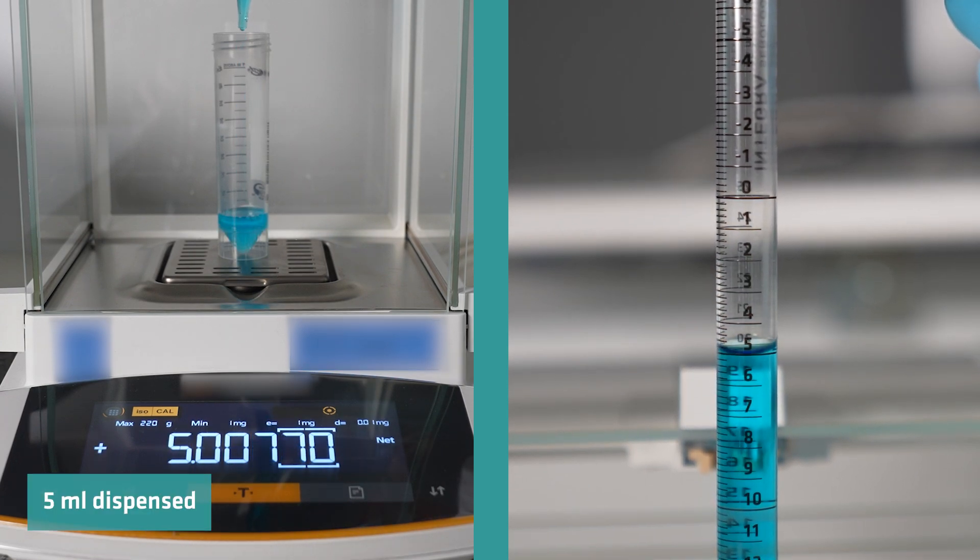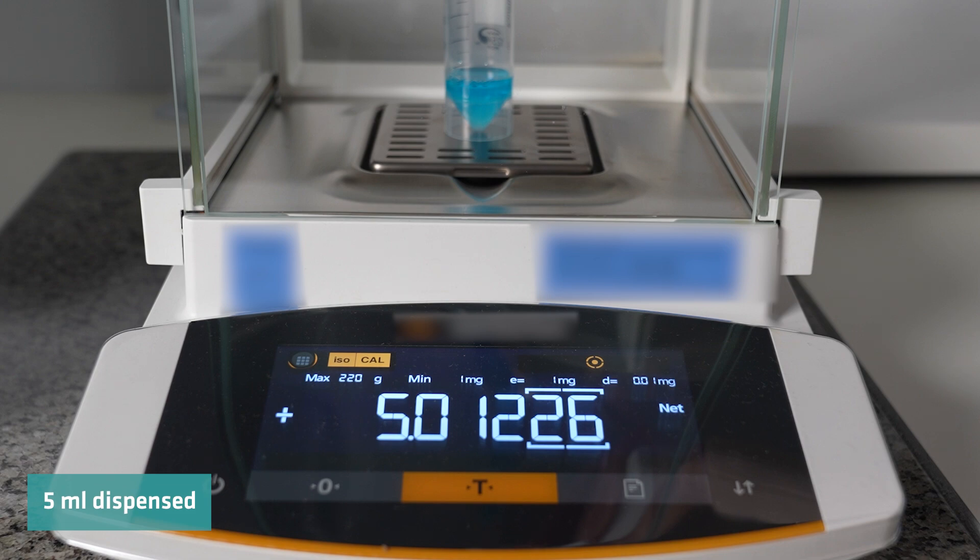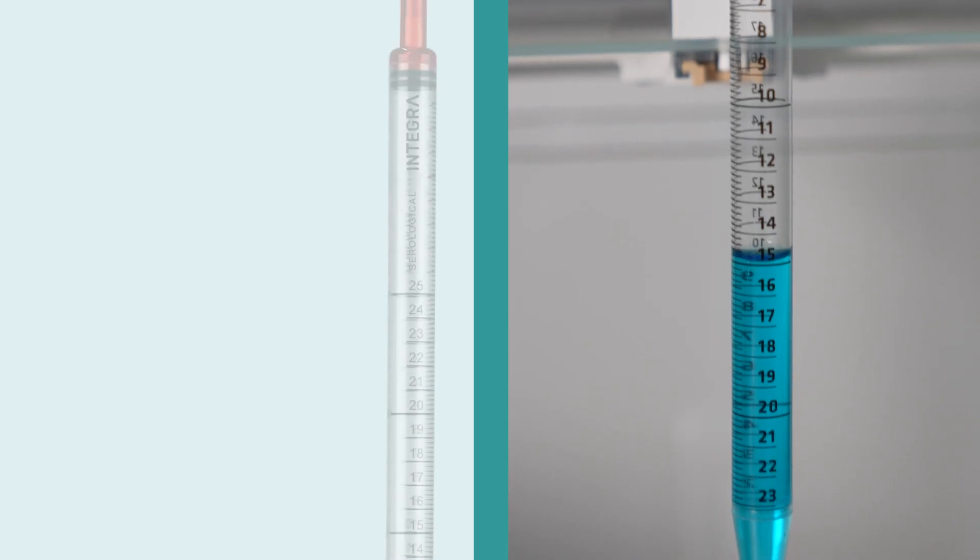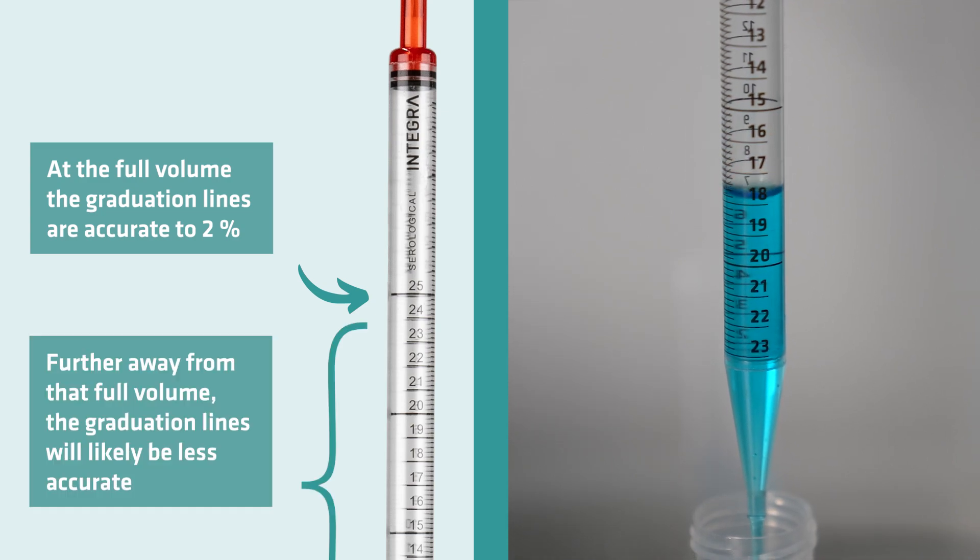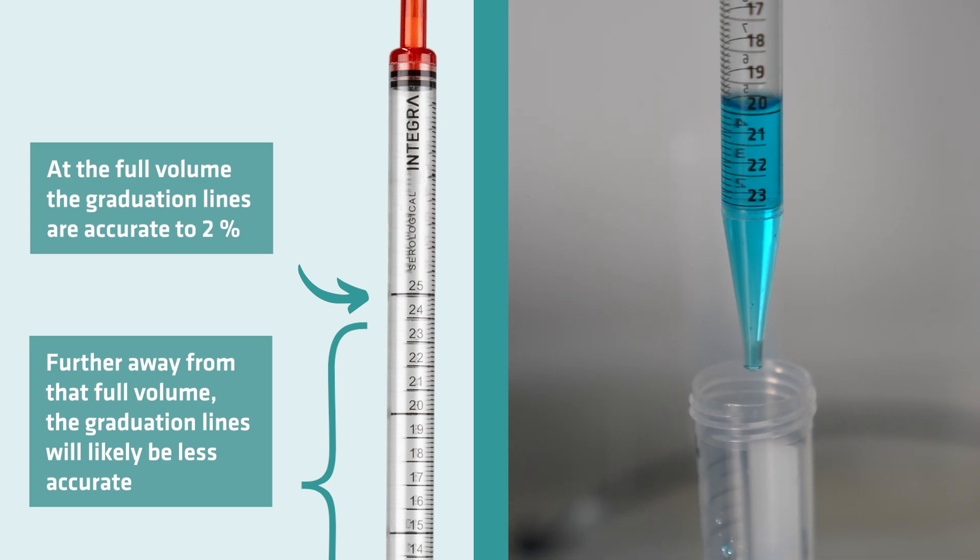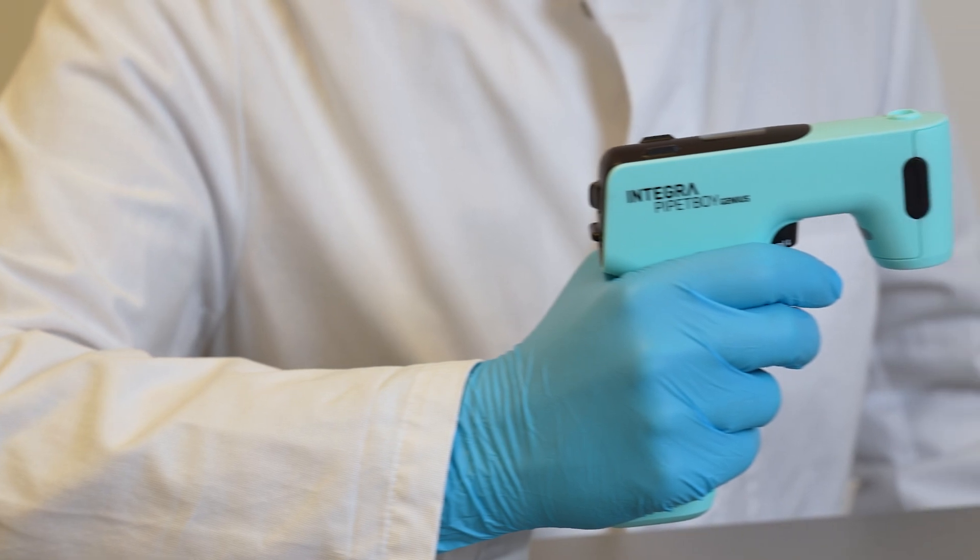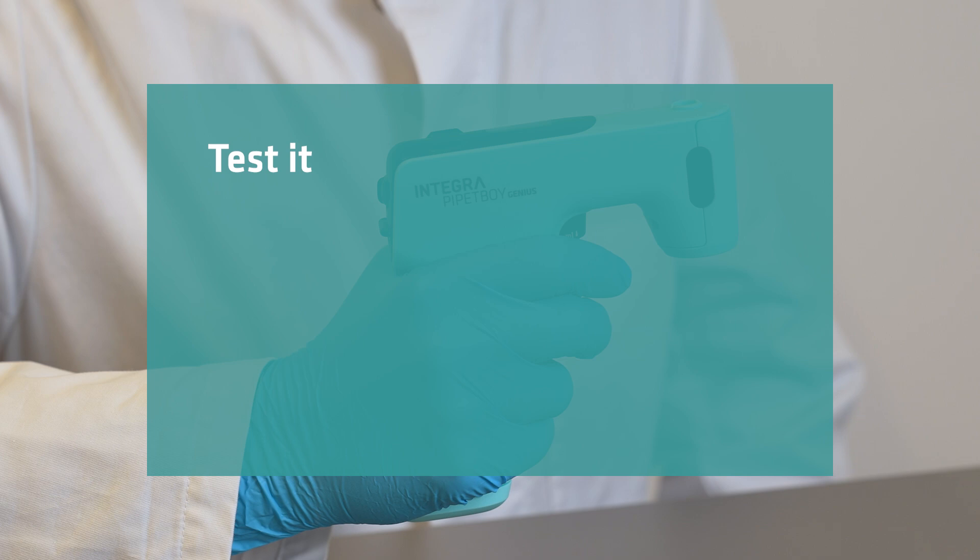That's likely much better than you're doing by hand. If you dispense multiple times, you'll get further and further away from where you think the liquid should match the graduation, but again, each dispense is within 2% of where it should be. There's something else: the graduation lines on serological pipettes are very accurate at the full volume of that pipette, but further away from that full volume, the graduation lines will likely not be 100% accurate. This is true with all serological pipettes. So trust your Pipette Boy Genius—it's accurate. In fact, test it if you're still skeptical. Use a balance or simply your eyes.